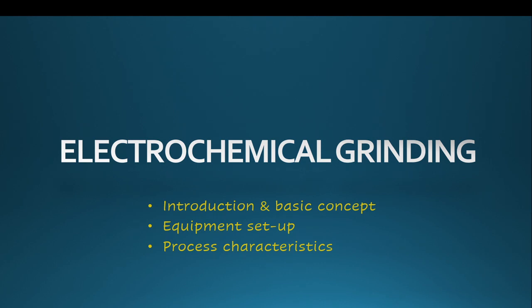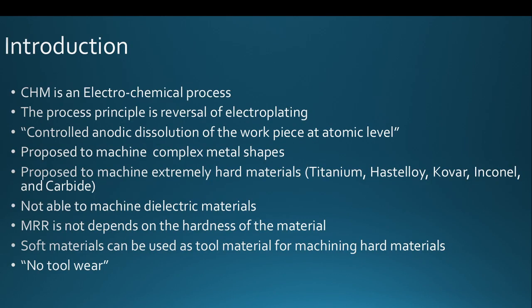Electrochemical grinding is an electrochemical process, generally called chemical machining. This process is the reversal of the electroplating concept — instead of coating a metallic material over another, material is removed. The actual working concept is controlled anodic dissolution of the workpiece at the atomic level.